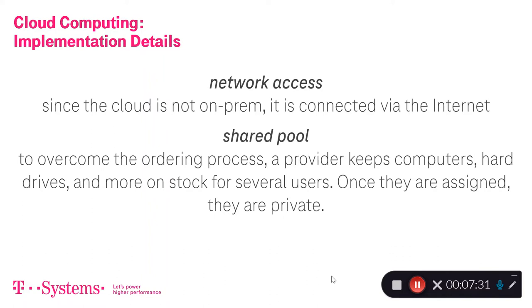If you implement that, you will experience two features. One is network access, which is more or less a direct consequence of the ubiquitous way of working with the cloud — since the cloud is not in your computer cabinet, not on premises, it is connected via the internet. And to overcome the ordering process that usually takes days, if not weeks or months depending on your organization, a cloud provider keeps a pool of computers, hard drives and other resources on stock for several users at once.